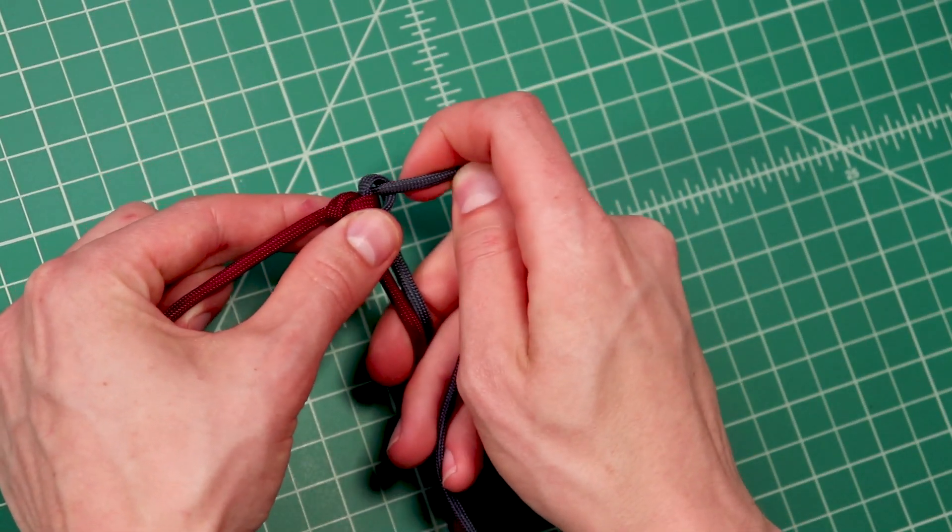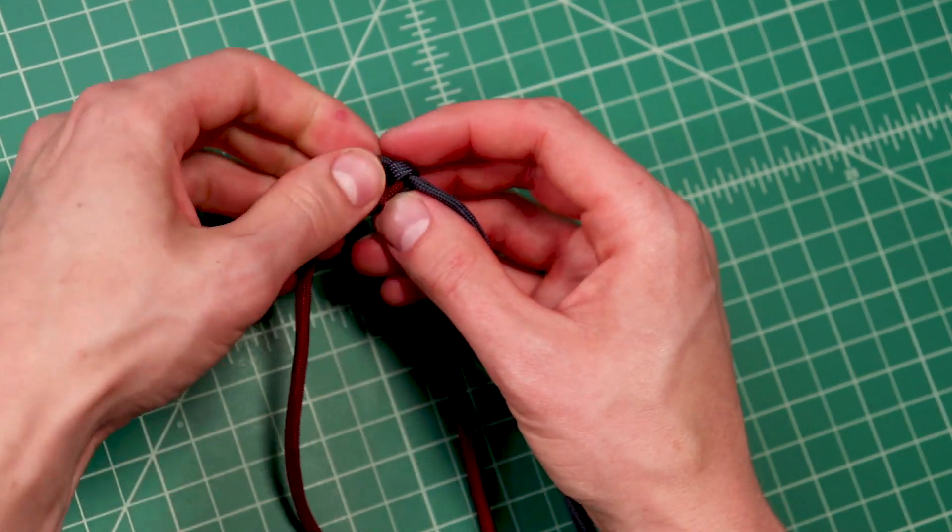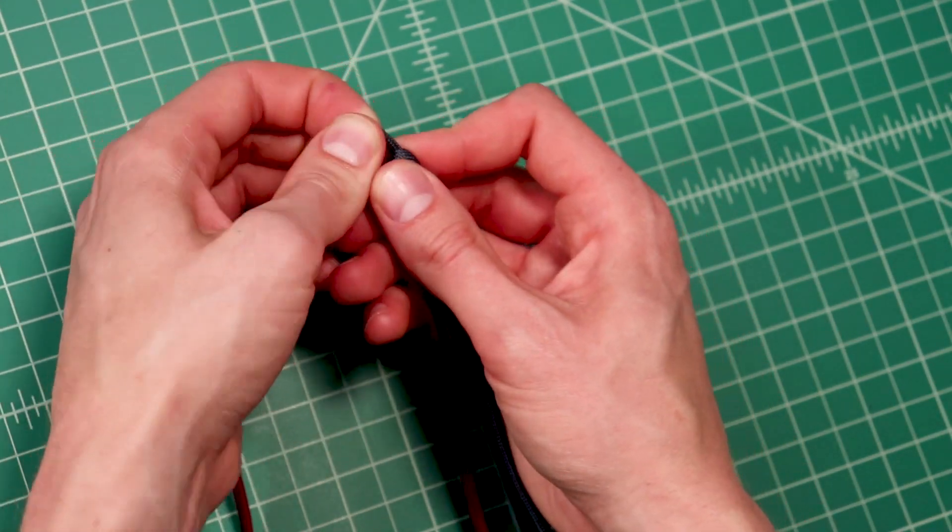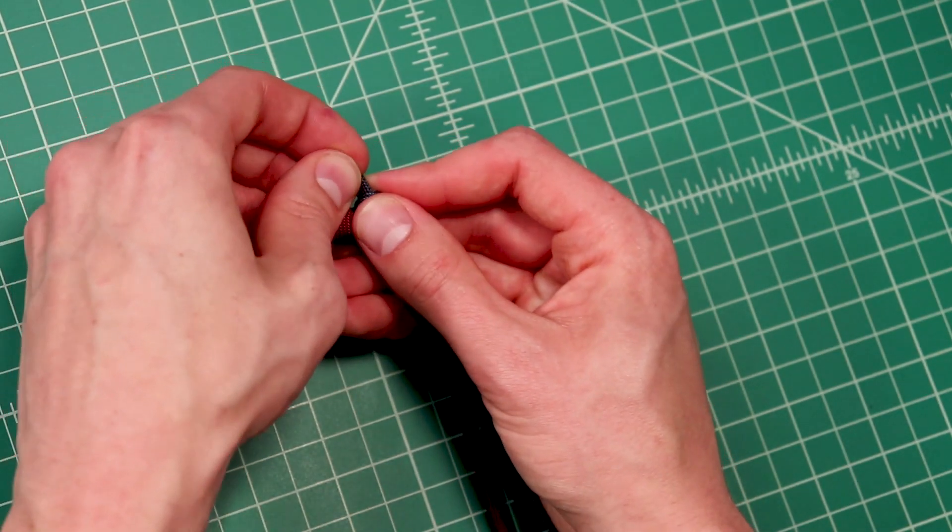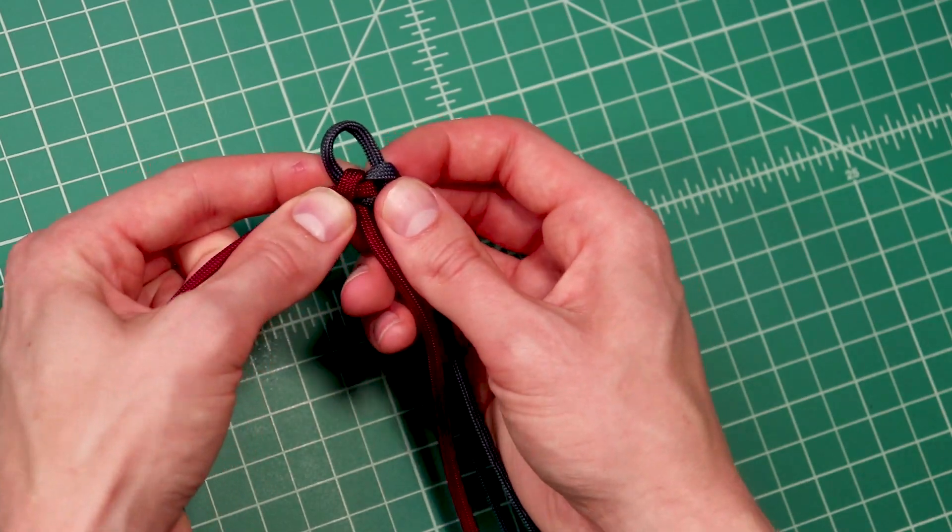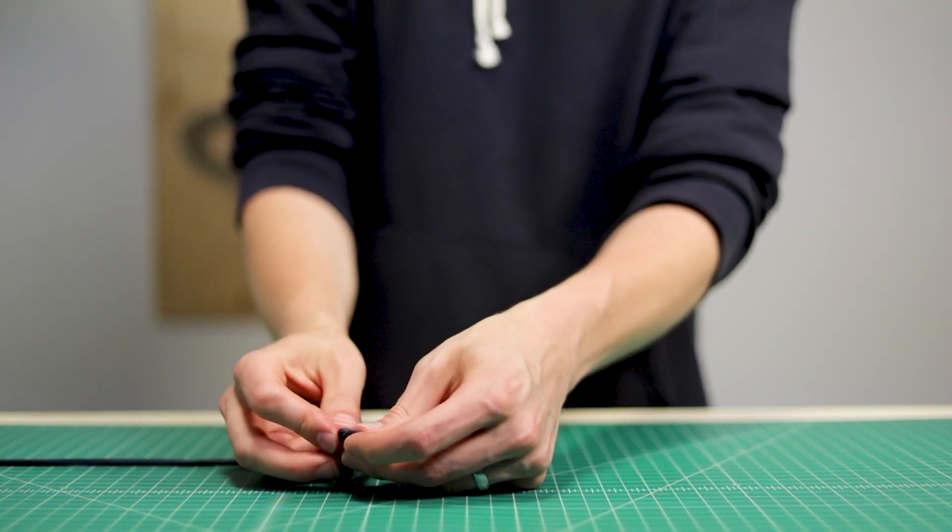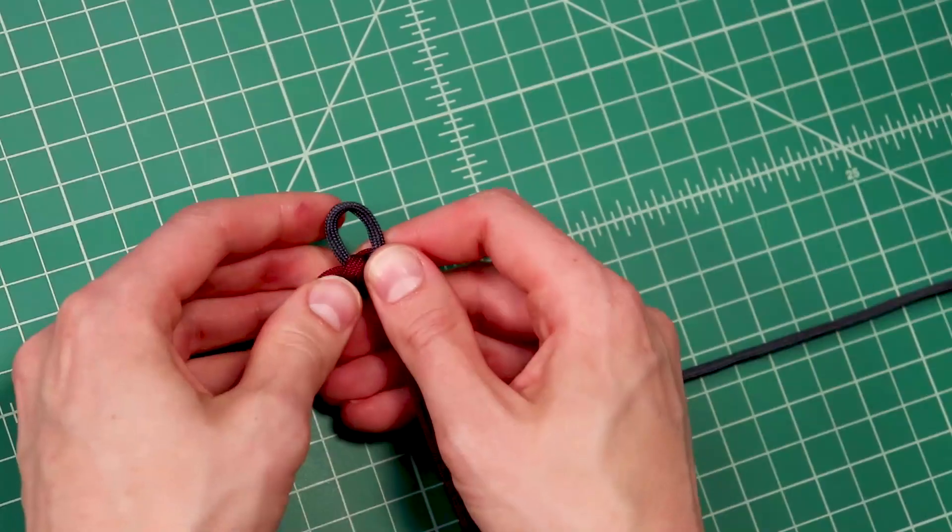And now you can tighten that down. But you do want to grab that left loop and leave about that much space. We're going to be making a diamond knot on the other end so that's going to be the closure. So once you have that loop the right size, just tighten that down really good so it doesn't come undone.